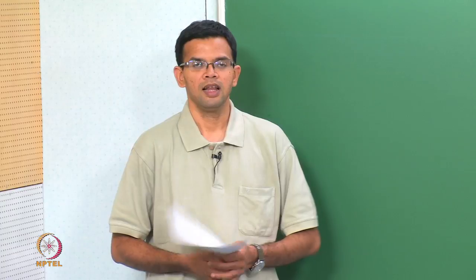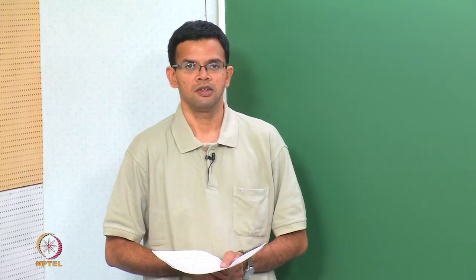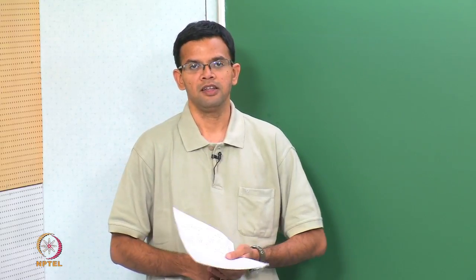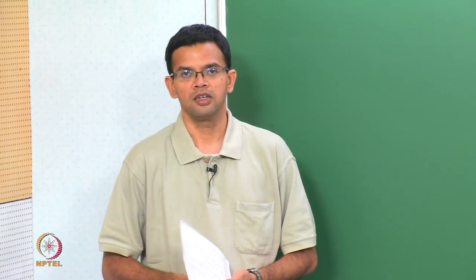Let us start with a brief recap of last class. We looked at a very short history of IC device manufacture. An integrated circuit is one in which the various circuit elements — a diode, a transistor, resistor, or capacitor — are all manufactured or fabricated on a single wafer. This type is called a monolithic integrated circuit because you have the same chip.